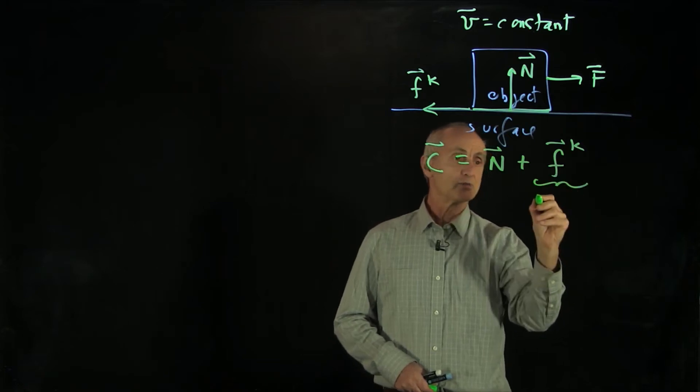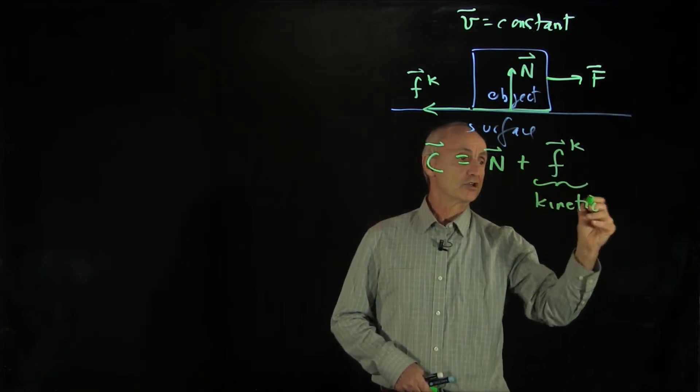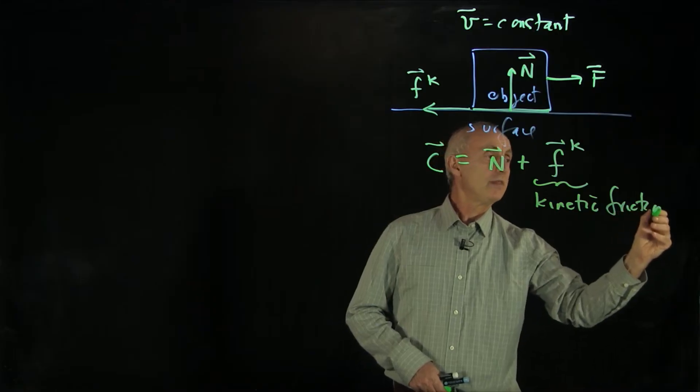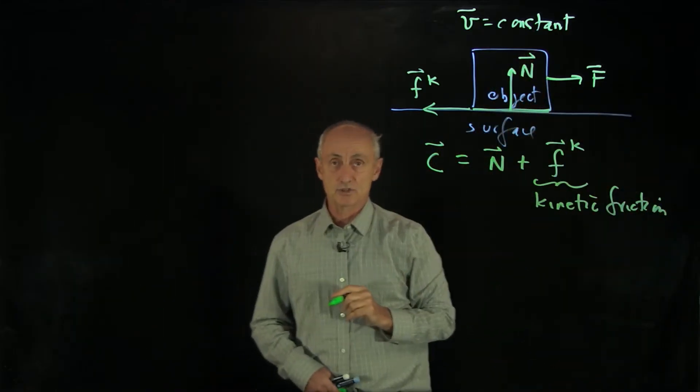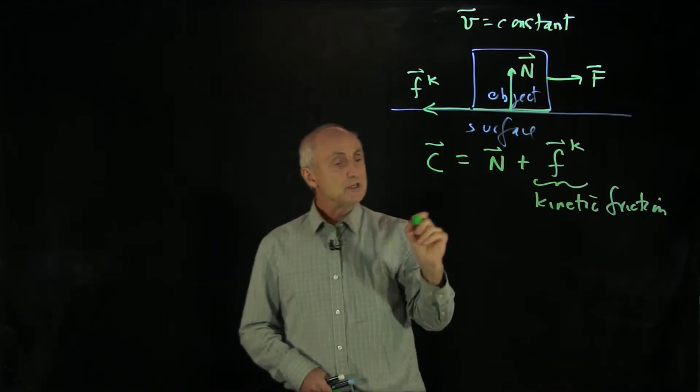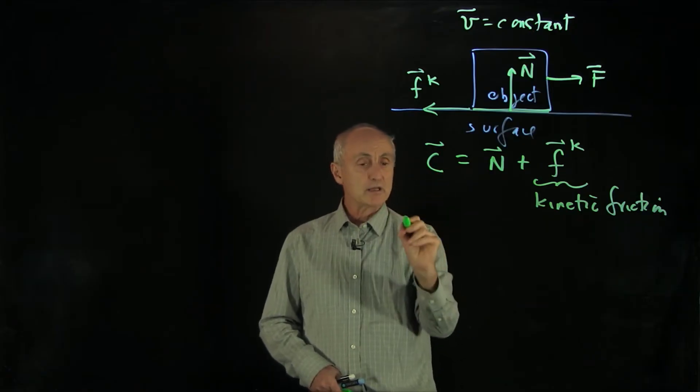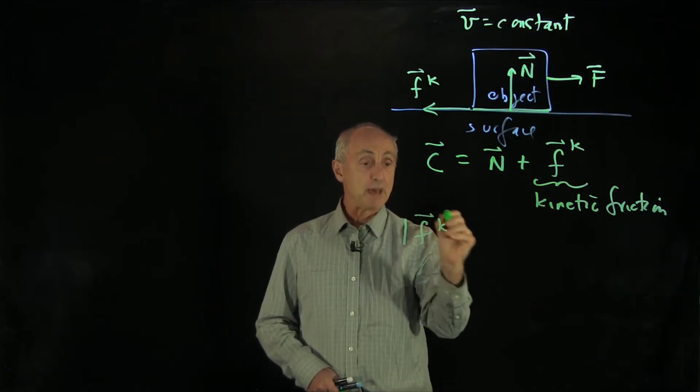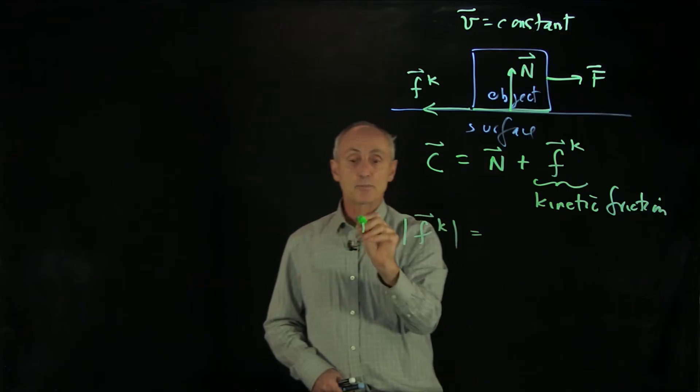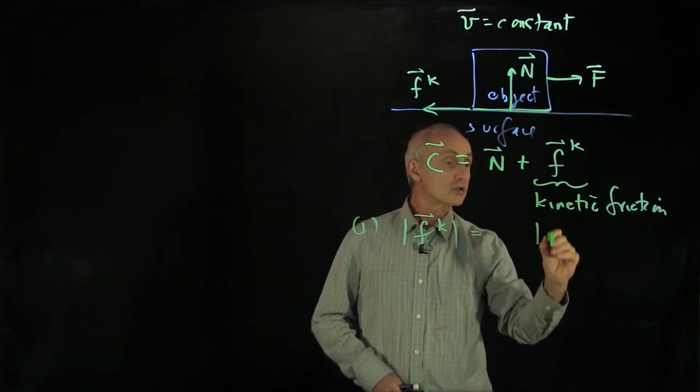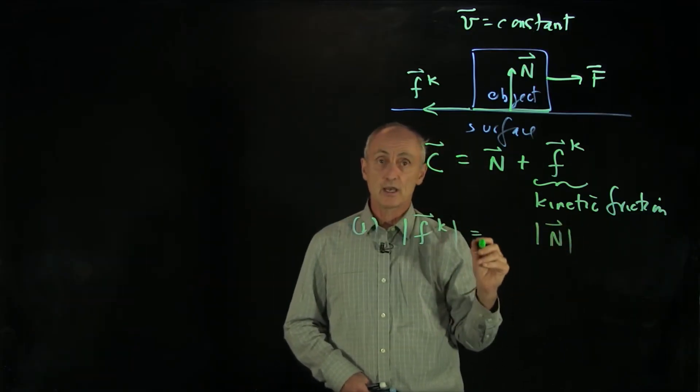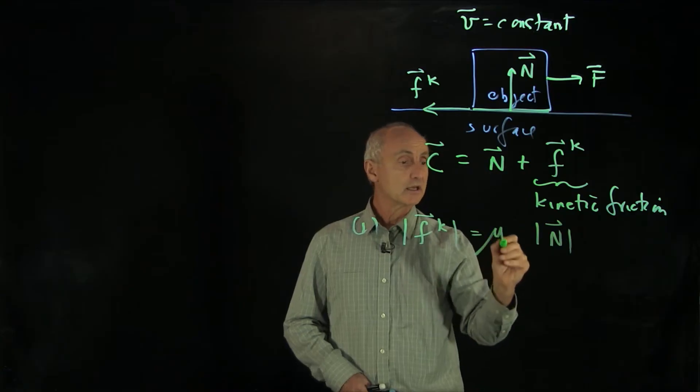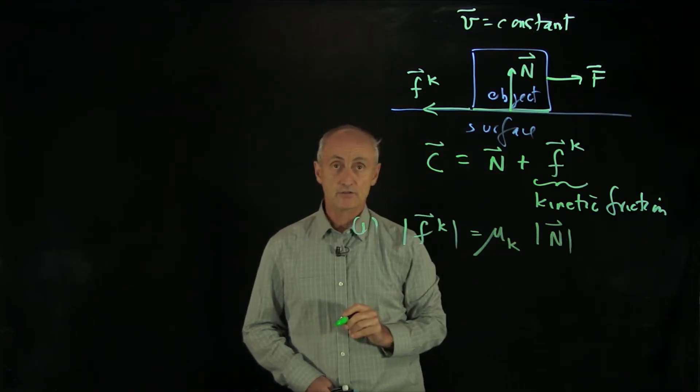This is what we'll call kinetic friction. Now when the object is moving at a constant speed, we know that from experiment that the kinetic friction, the magnitude, is proportional to the magnitude of the normal force. And the constant of proportionality is called the coefficient of kinetic friction.